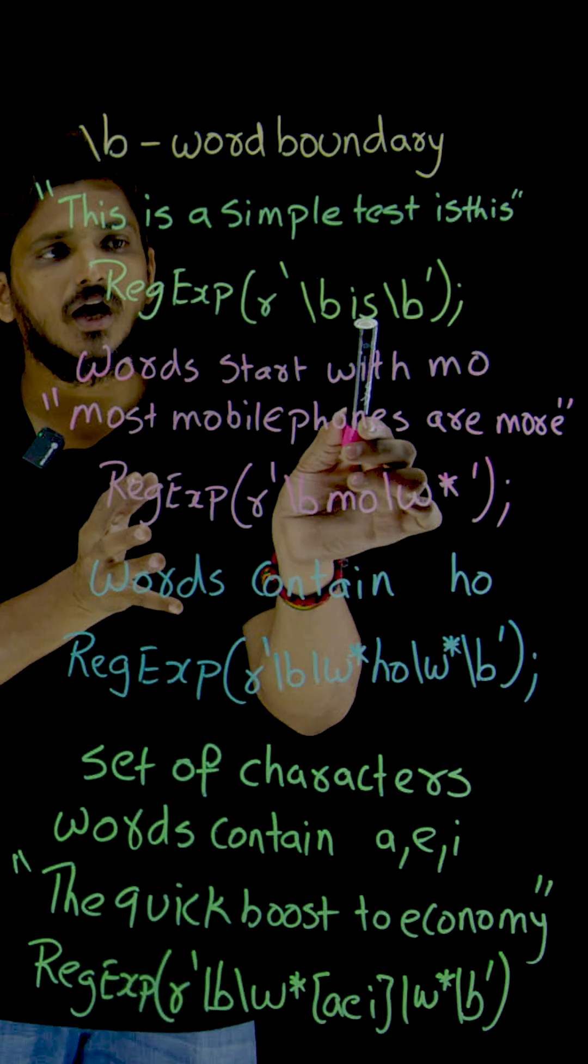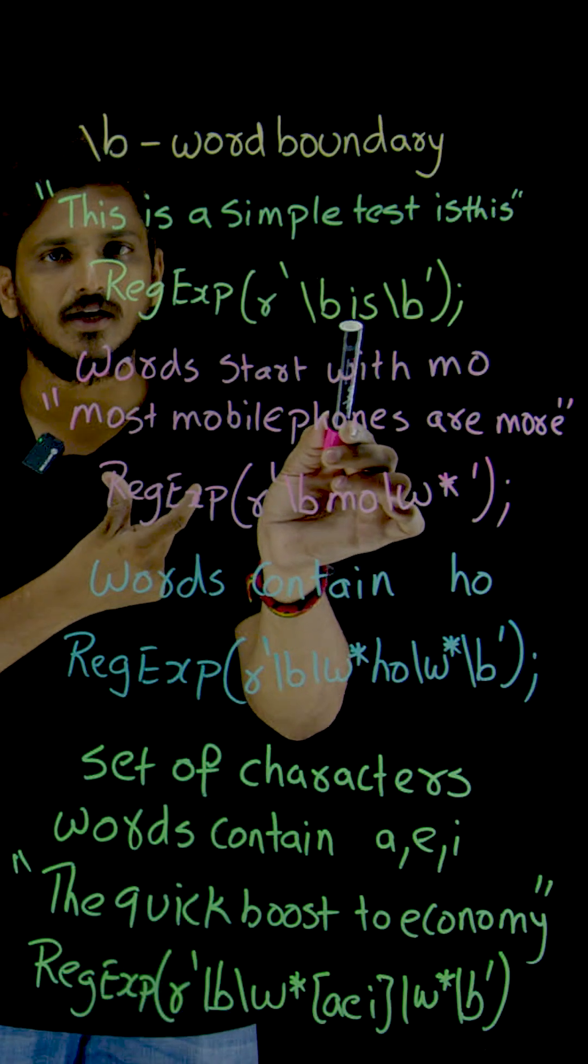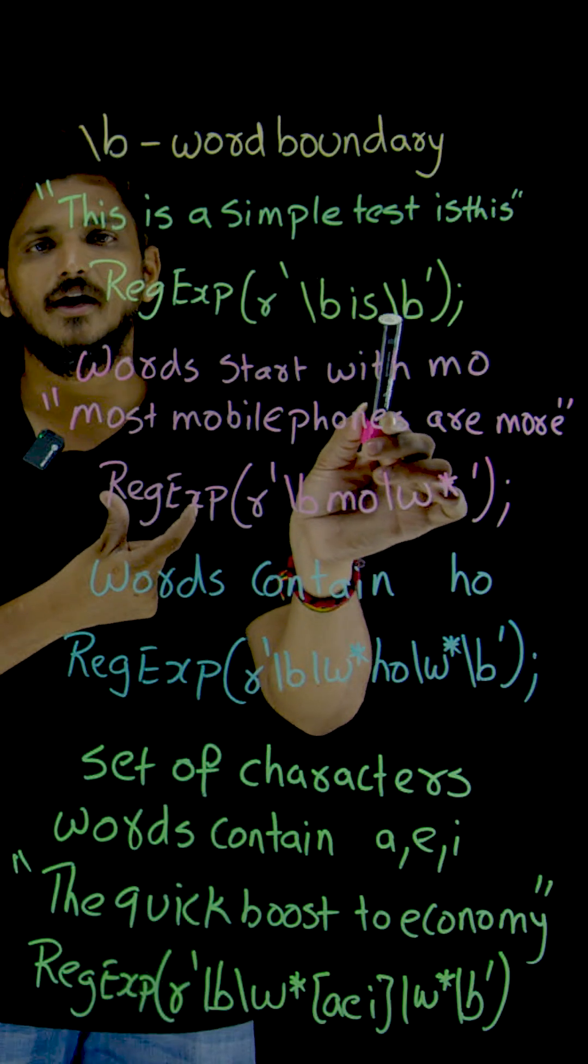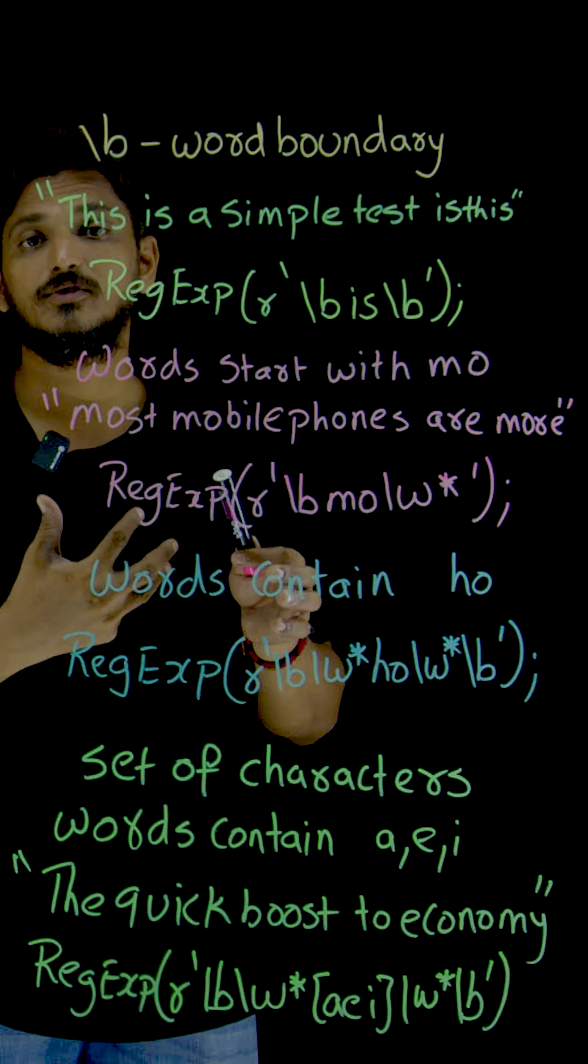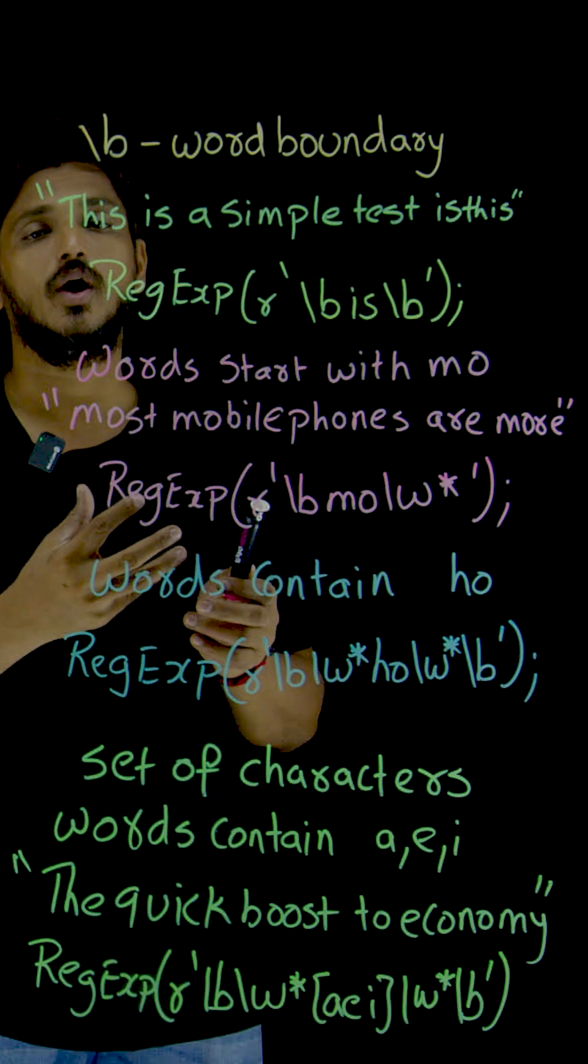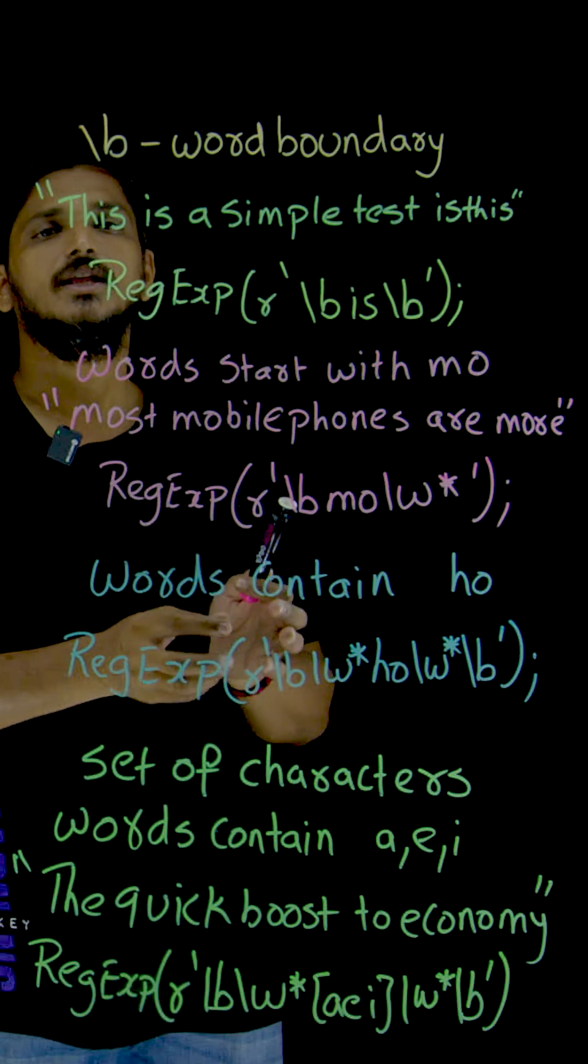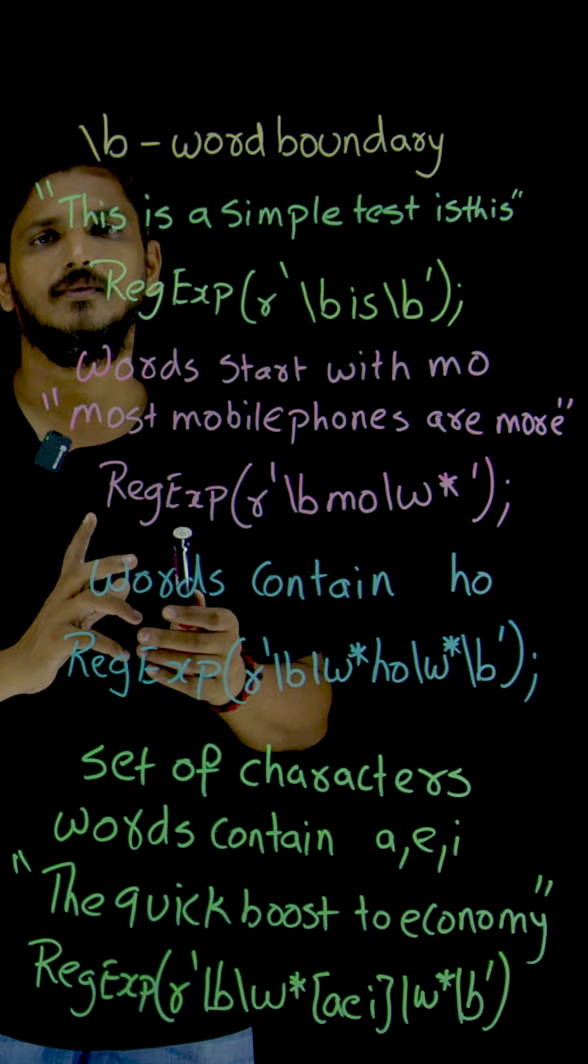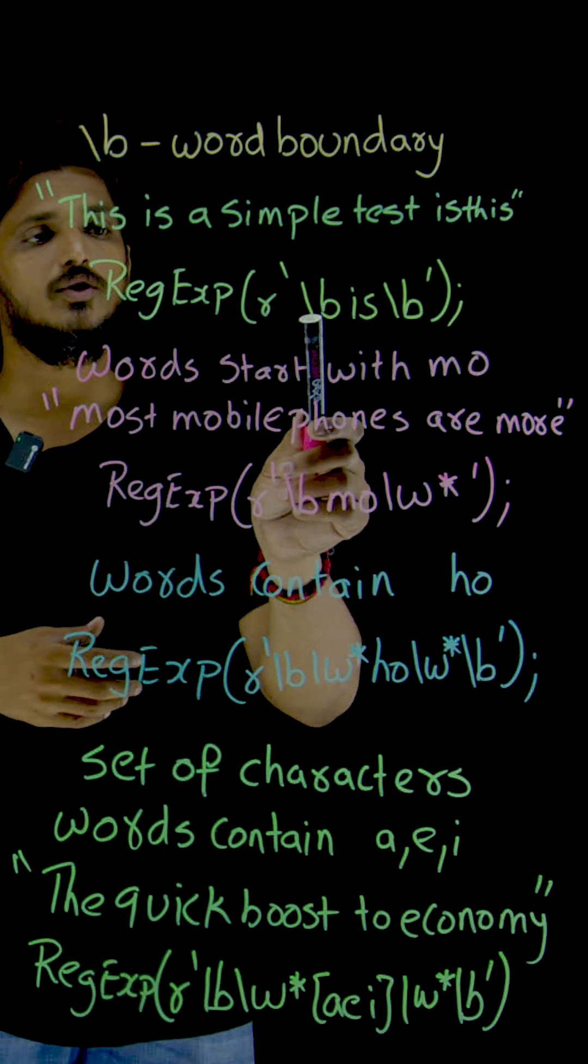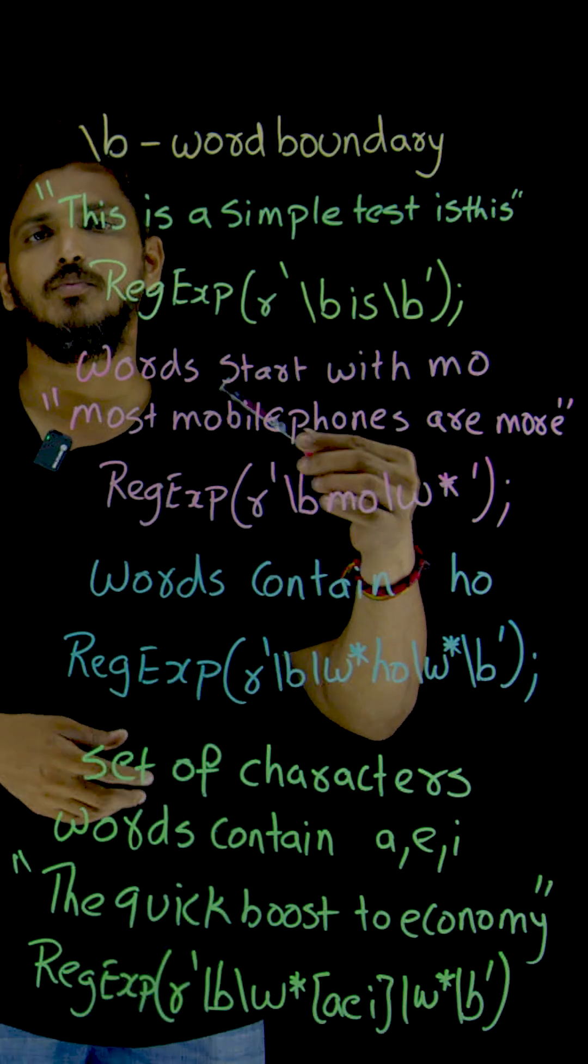After that, you need to have only 'is'. Then end slash b, the end of the word boundary, means it will identify only the word 'is'. That's how we use slash b as a word boundary.